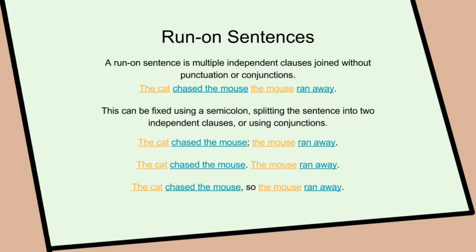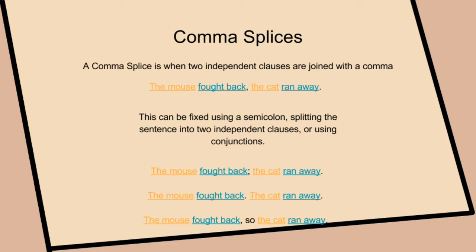Run-on sentences — a run-on sentence is multiple independent clauses joined without punctuation or conjunctions: 'the cat chased the mouse the mouse ran away.' This can be fixed using a semicolon, splitting the sentence into two independent clauses, or using conjunctions.